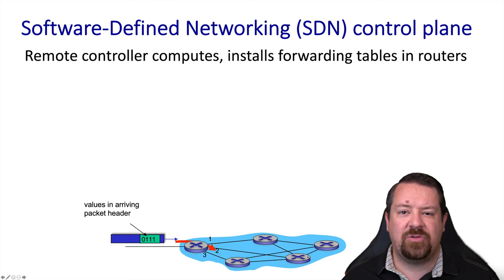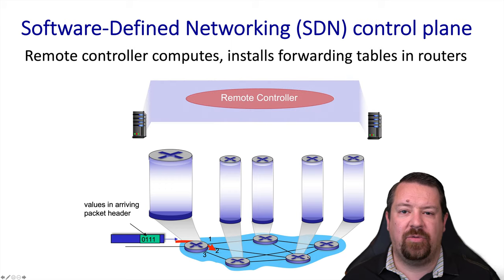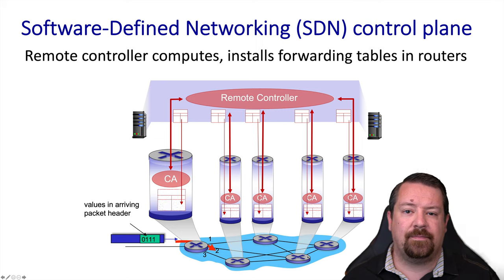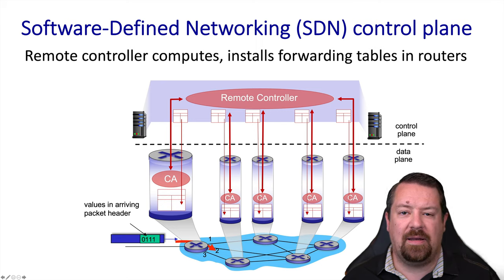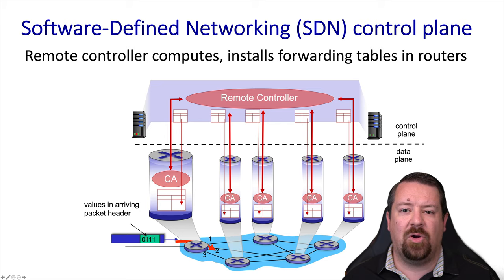The software-defined networking approach takes a different strategy. While the IP protocol itself remains unmodified, each individual router only performs local forwarding functions, and the control plane is removed from the individual routers and centralized in remote servers. Those remote servers populate the forwarding tables and install them in the routers, so the division between control plane and data plane also aligns with the separation between devices. In the software-defined networking model, the individual routers are often referred to as switches — specifically OpenFlow switches — which are routers that don't have built-in control plane functionality.